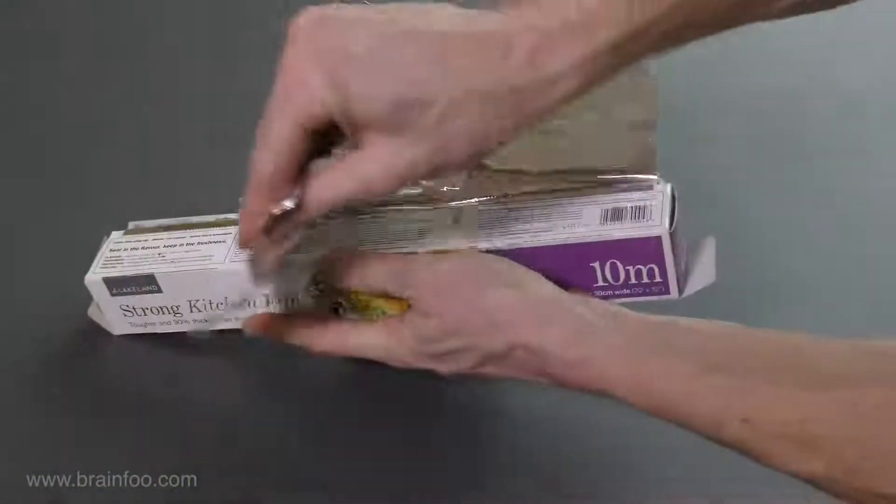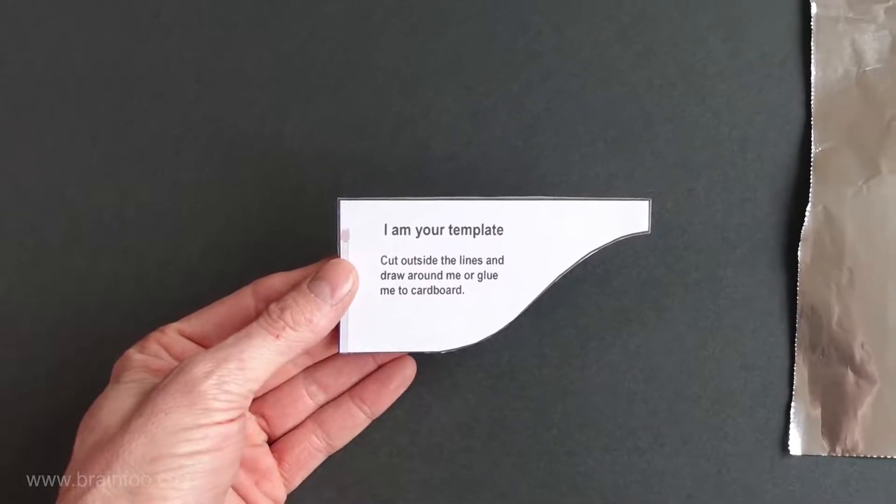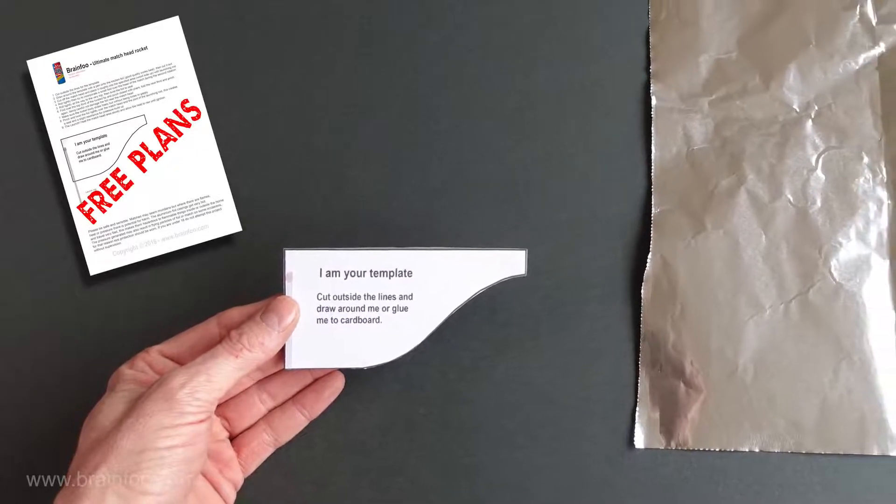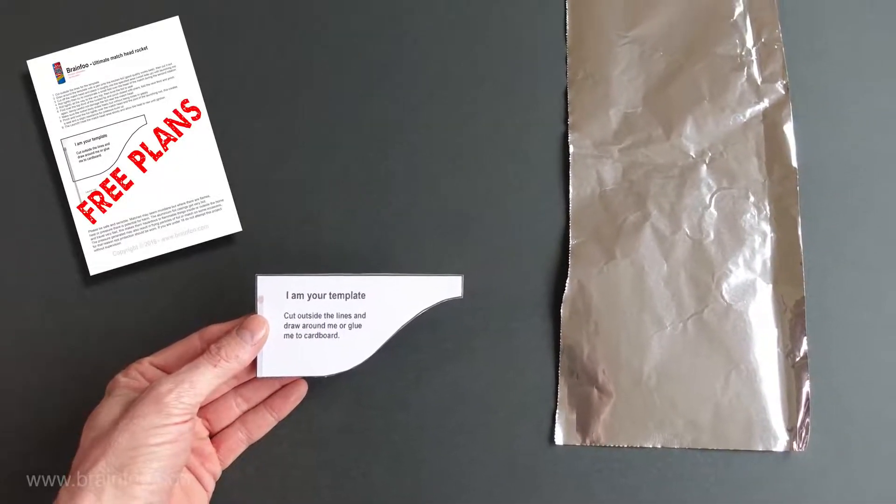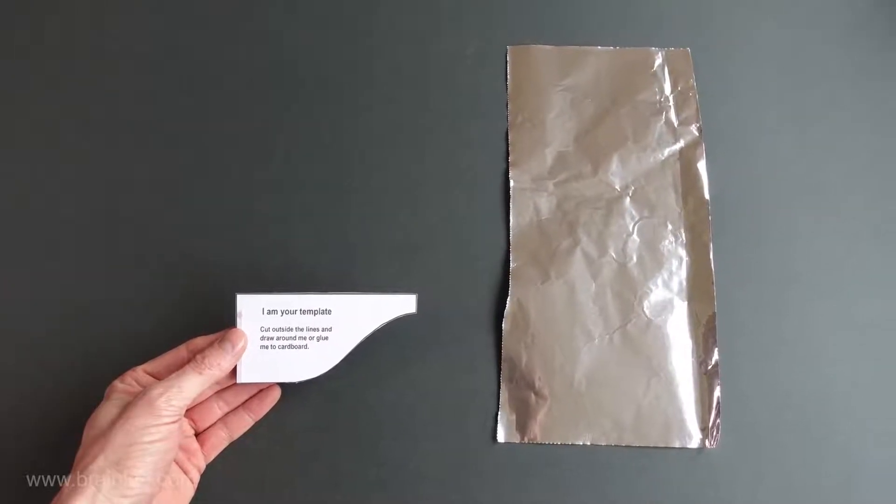Now pull about 5 inches of foil out and cut it off. Here is the template I'll be using to mark onto the foil. And it comes printed to scale size on my plan sheet which is a 100% free download on the website.